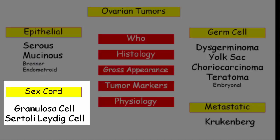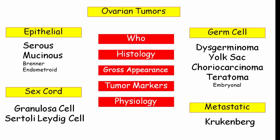So how are we going to tell them apart? We're going to do that first by who is the patient in the question stem — this is rarely a distinguishing feature, but it can give you a big clue. Number one, we're going to base it on histology. As with most tumors, this is really where the money is. Other distinguishing features can be gross appearance, tumor markers, or physiology.